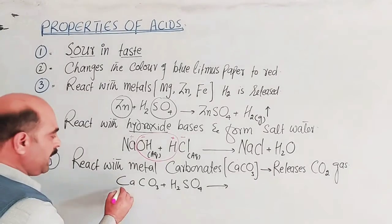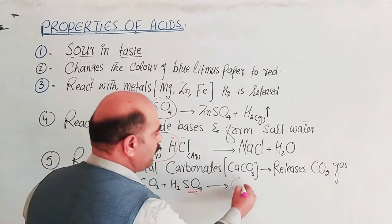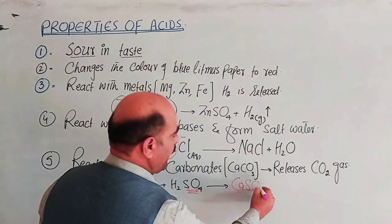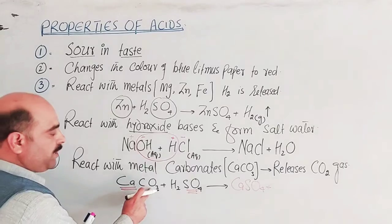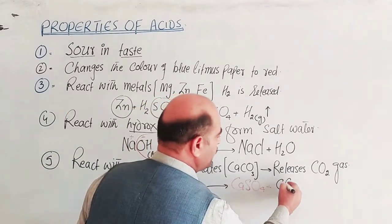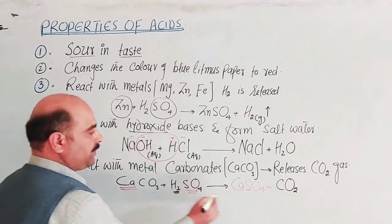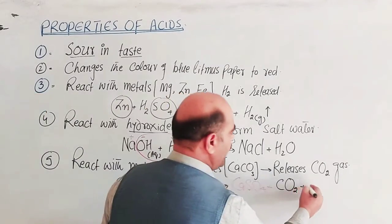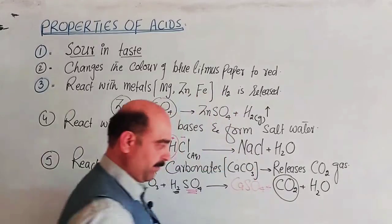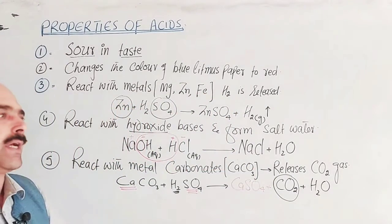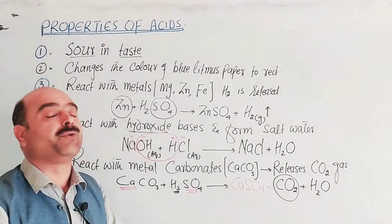The products of CaCO₃ reacting with H₂SO₄ are calcium sulfate, water (H₂O), and carbon dioxide gas (CO₂). So if metals carbonate reacts with acid, carbon dioxide gas is produced during this reaction.